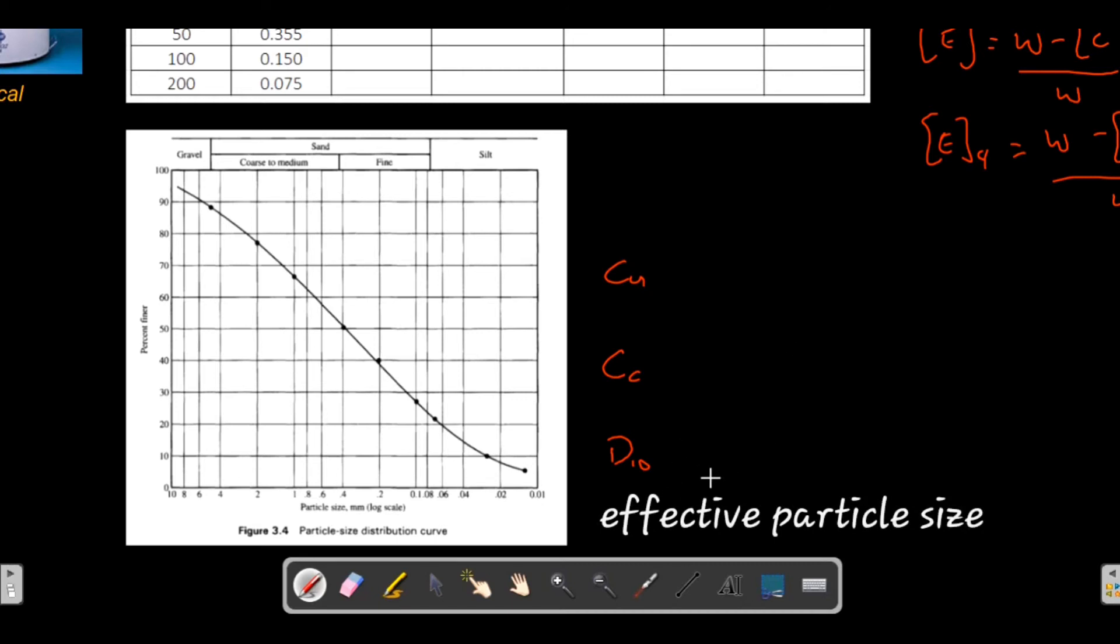D10 is the effective particle size. How do we get D10 from our curve? We just have to draw a line from the 10, so 10 percent finer, and then connect it with the diameter here. This means that for D10, 10 percent of your soil is finer than, for example, 0.029 millimeters.